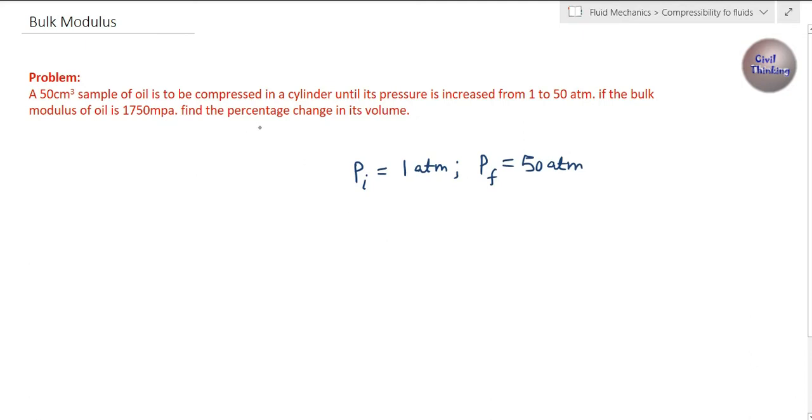We have to find the percentage change in the volume. The bulk modulus K is equal to 1750 megapascals, which is 10^6 pascals, and the volume of the oil sample is 50 cm³. We have to find the percentage change in its volume.